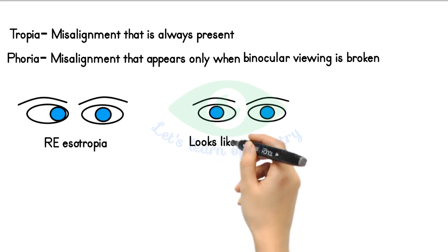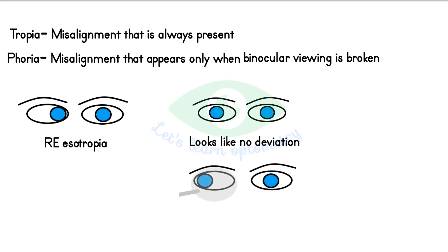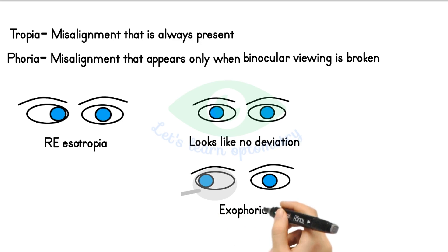It looks like no deviation, but when covering one eye and preventing the binocular viewing, the right eye turns out and goes to a heterophoric position under the cover. It is a case of exophoria. Unlike tropia, we usually do not specify the eye in phoria — like right eye exophoria or left eye exophoria — because phoria of the same or very similar magnitude will almost always be present with the other eye also.